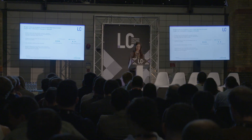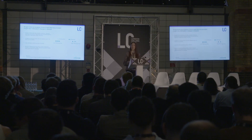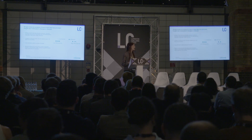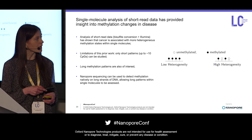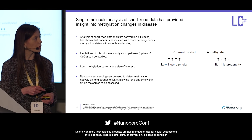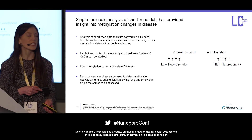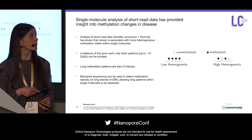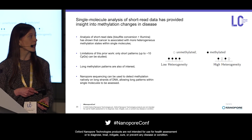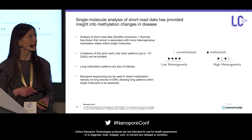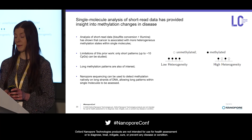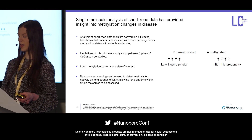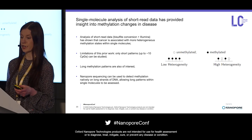To clarify what I mean by heterogeneity within single molecules: if I have a region of the genome within a single molecule where all or the majority of CpG sites have the same methylation state, that would be a low heterogeneity pattern. Whereas if I've got a lot of methylated and unmethylated CpGs interspersed with each other, that would be a high heterogeneity pattern.